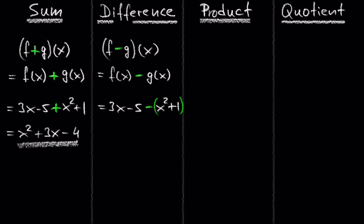The next step is to remove the parentheses and the negative sign in front of it. Recall when doing that, the signs in front of x squared and 1 are going to be negative. So we get 3x minus 5 minus x squared minus 1. Negative 5 and negative 1 are the only like terms we can combine, so we get negative x squared plus 3x minus 6. The difference of f and g is negative x squared plus 3x minus 6.